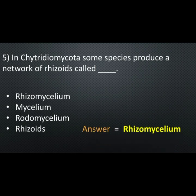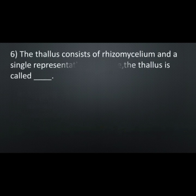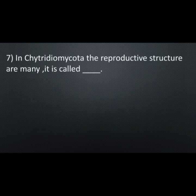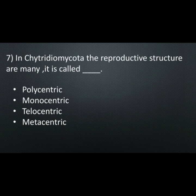Correct option is: rhizomycelium. Question number six: the thallus consists of rhizomycelium and a single reproductive structure; the thallus is called — options are: polycentric, monocentric, telocentric, metacentric. Correct option is: monocentric. Question number seven: in Chytridiomycota when the reproductive structures are many, it is called — options are: polycentric, monocentric, telocentric, metacentric. Correct option is: polycentric.